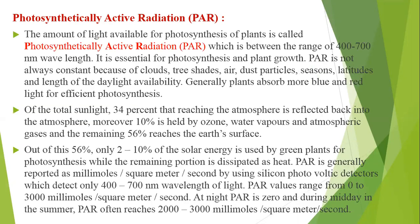The amount of light available for photosynthesis of plants is called photosynthetically active radiation, PAR. PAR is in the range of 400 to 700 nanometer wavelengths. It is essential for photosynthesis and plant growth.